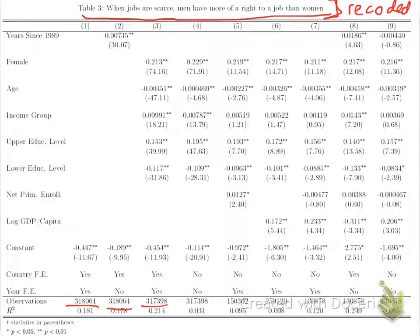Regression 2 shows us that as the years go by — as years advance by one, this variable going up by one each survey year — agreement with the more female-friendly view, that men don't have more rights to a job, increases. So if you're a believer in gender equality, that's a good sign that the global community is changing to be more in agreement that there shouldn't be gender preferences for jobs.